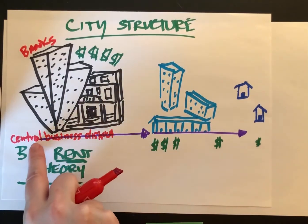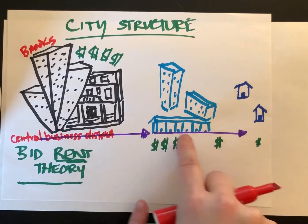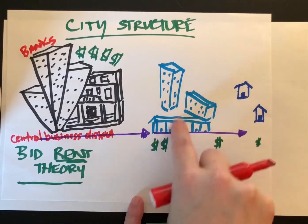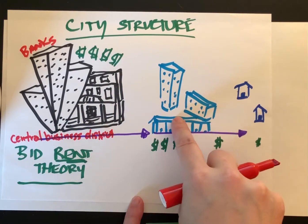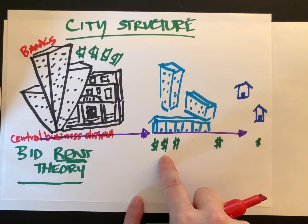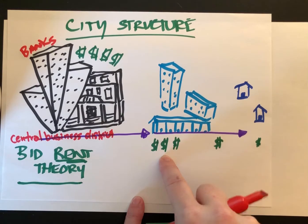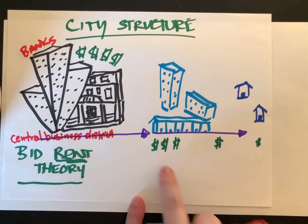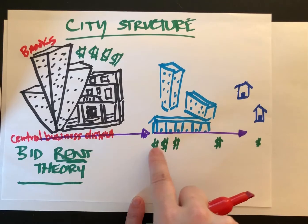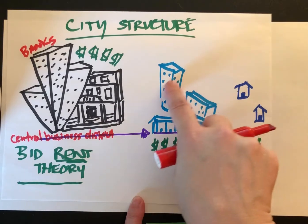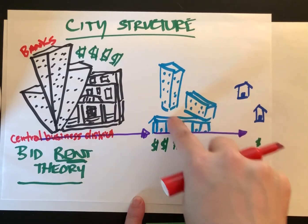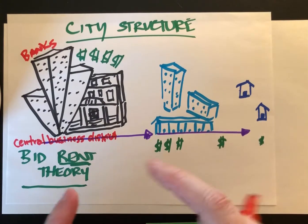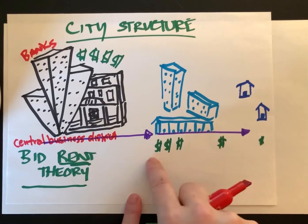As we move out from downtown we have still high-density housing and it still costs more. If any of you live in rental properties, renting downtown closer to the school is way more expensive than going further and further out. They tend to increase density and have more housing on smaller areas of land, but they charge more.